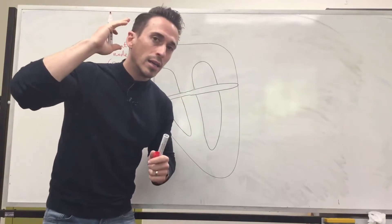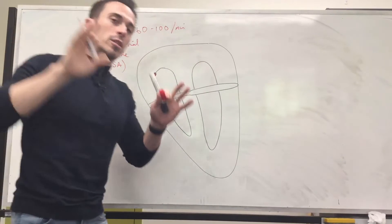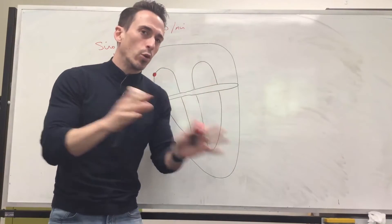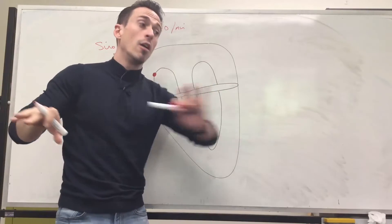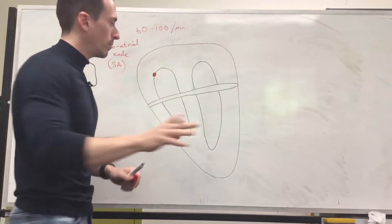Now the brain can impact how fast or slow this beats through a specialized part of the nervous system called the autonomic nervous system, that's the sympathetic or parasympathetic, fight or flight, rest and digest. But we're talking about just the sinus rhythm now.